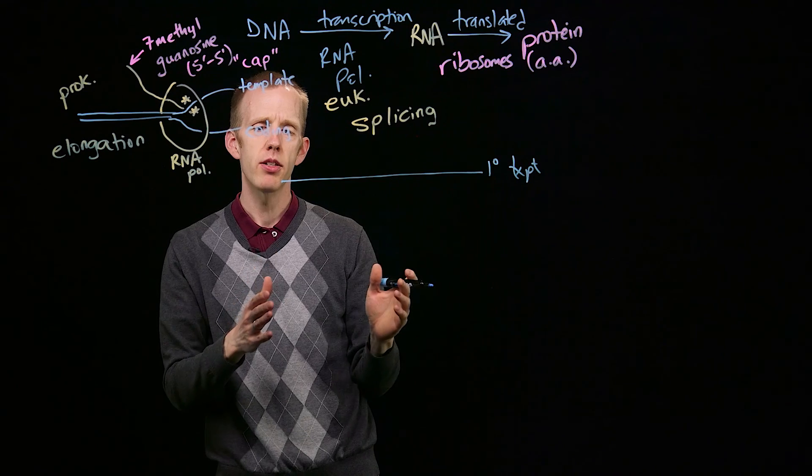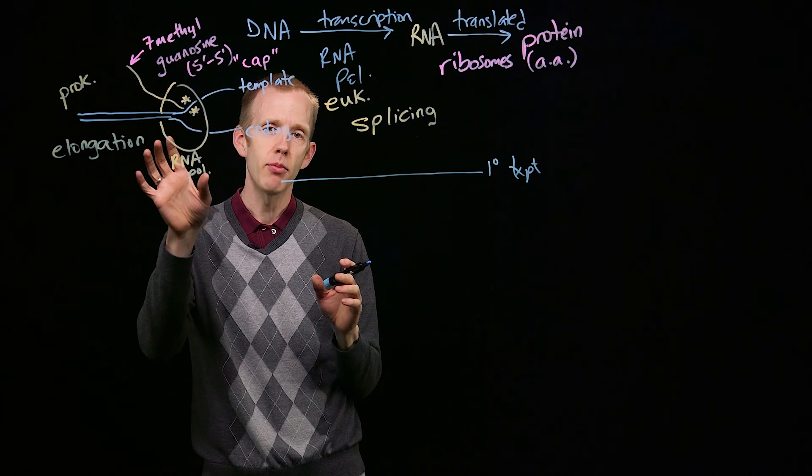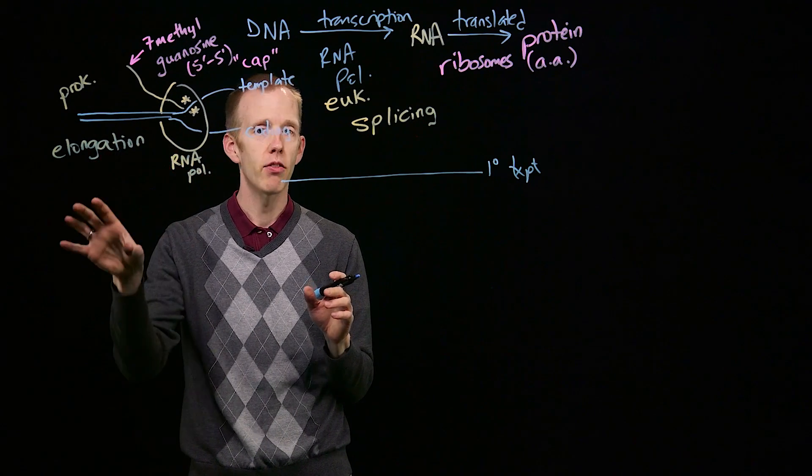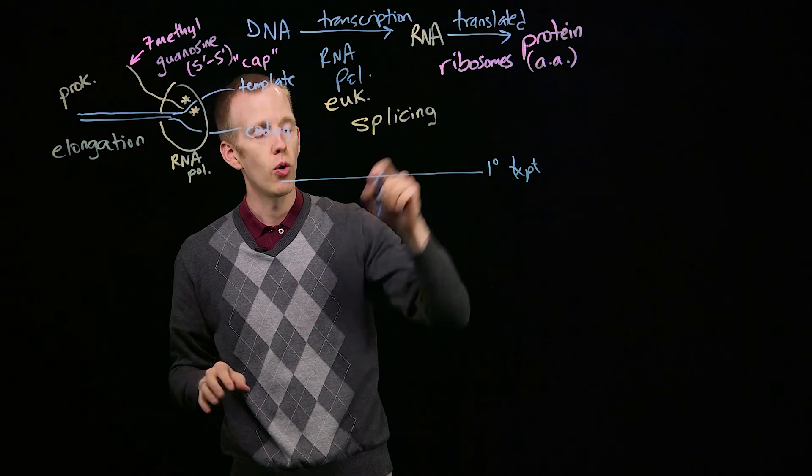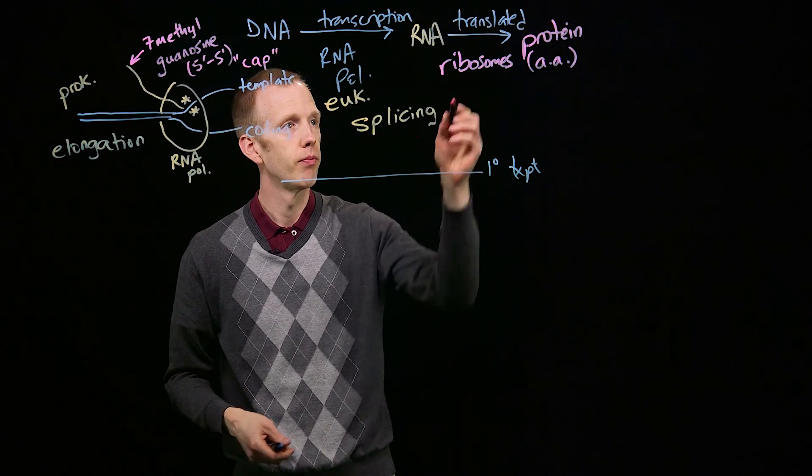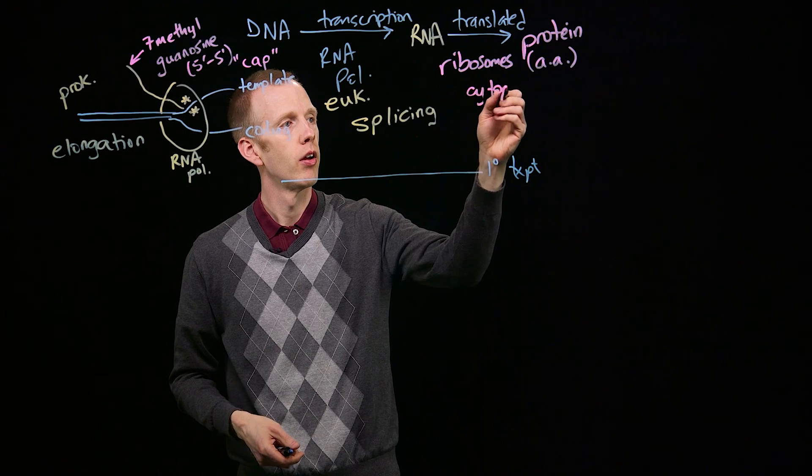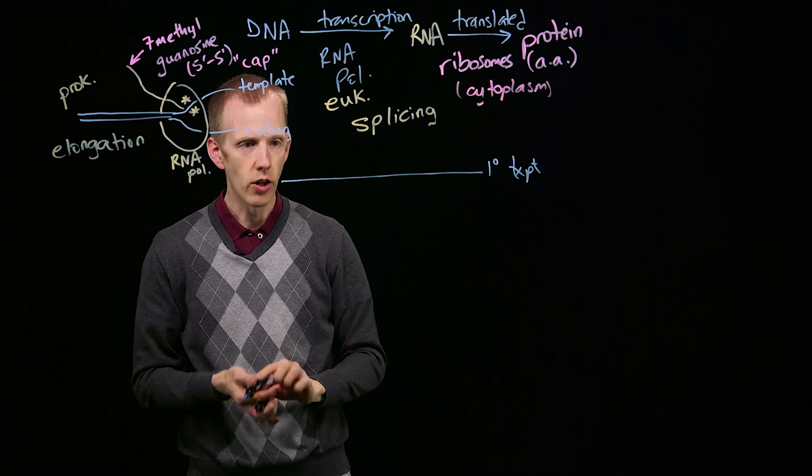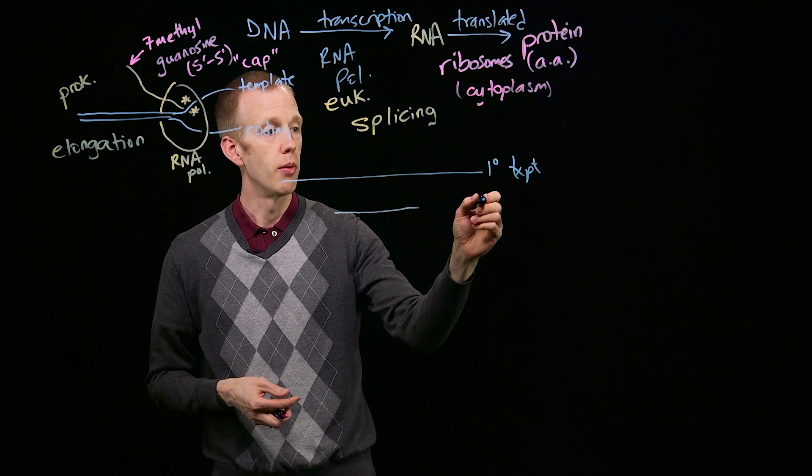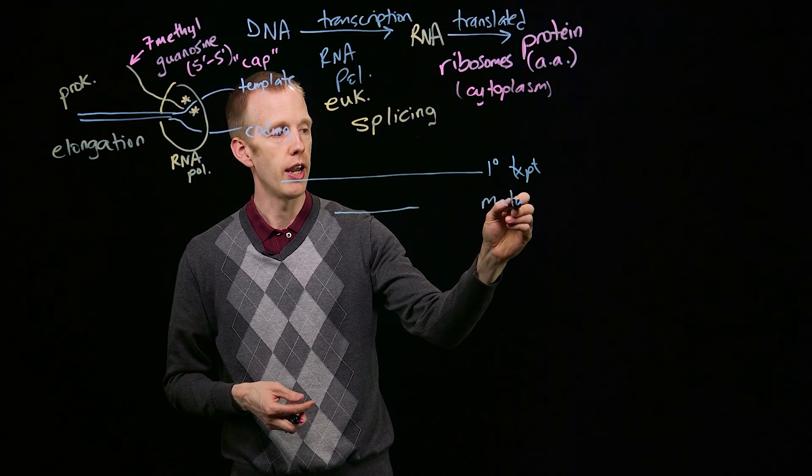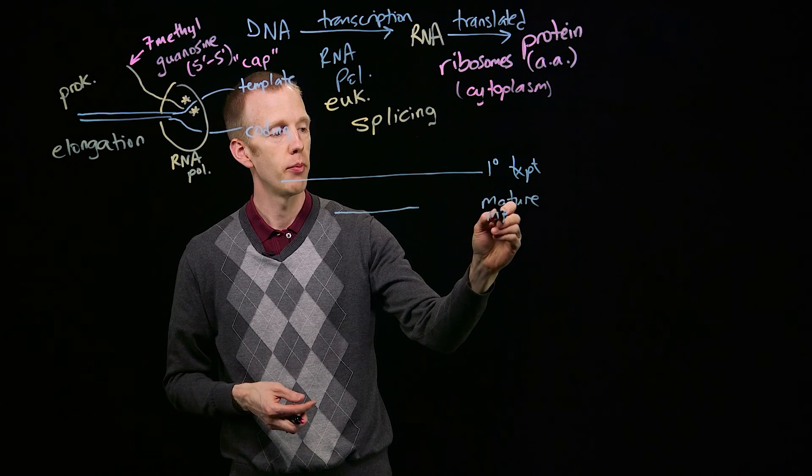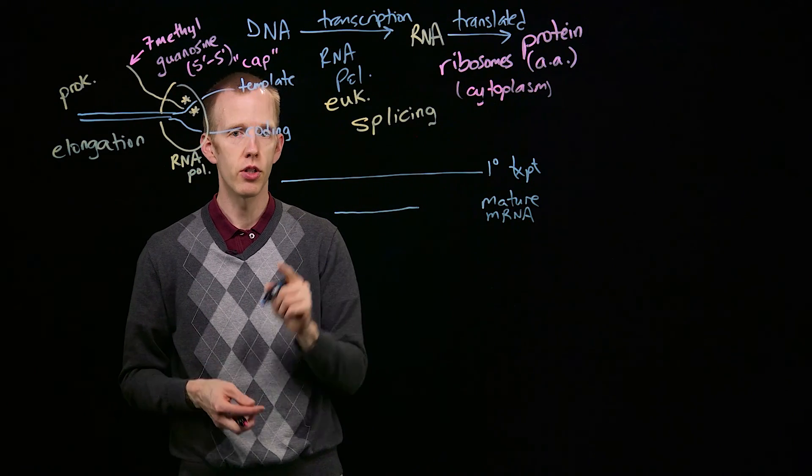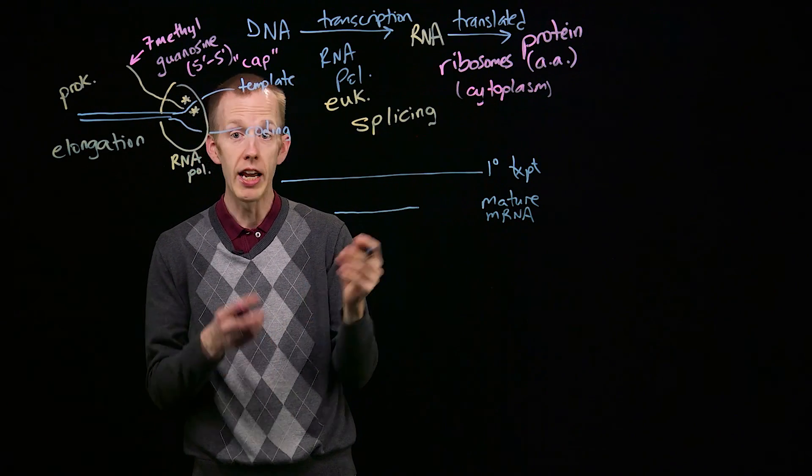it was maybe this long. But when they looked at the same transcript once it made it out of the nucleus into the cytoplasm, which is where translation occurs, they noticed that the transcript, the mature messenger RNA, which is what it's called after the messenger RNA of a eukaryote leaves the nucleus, is smaller.